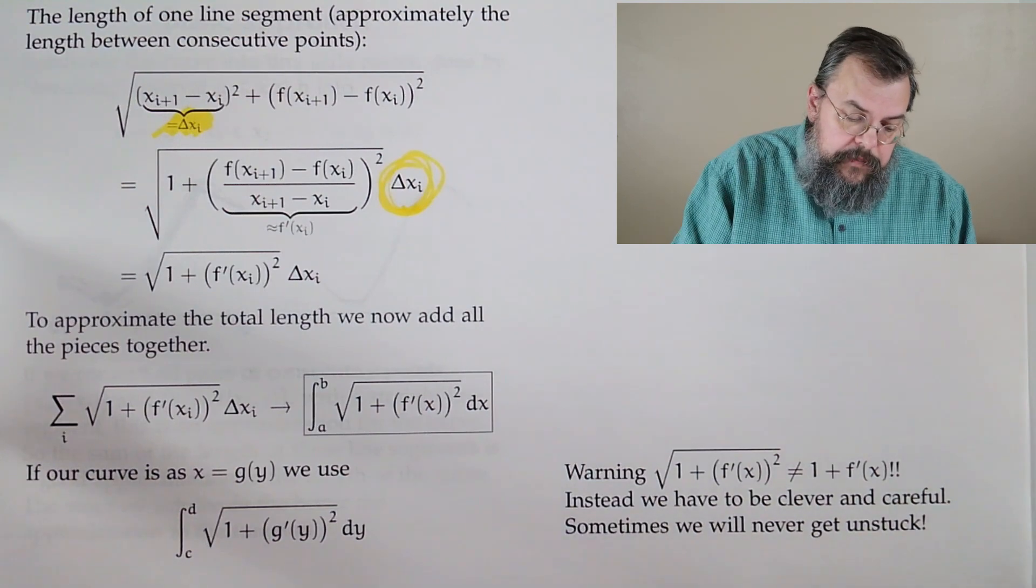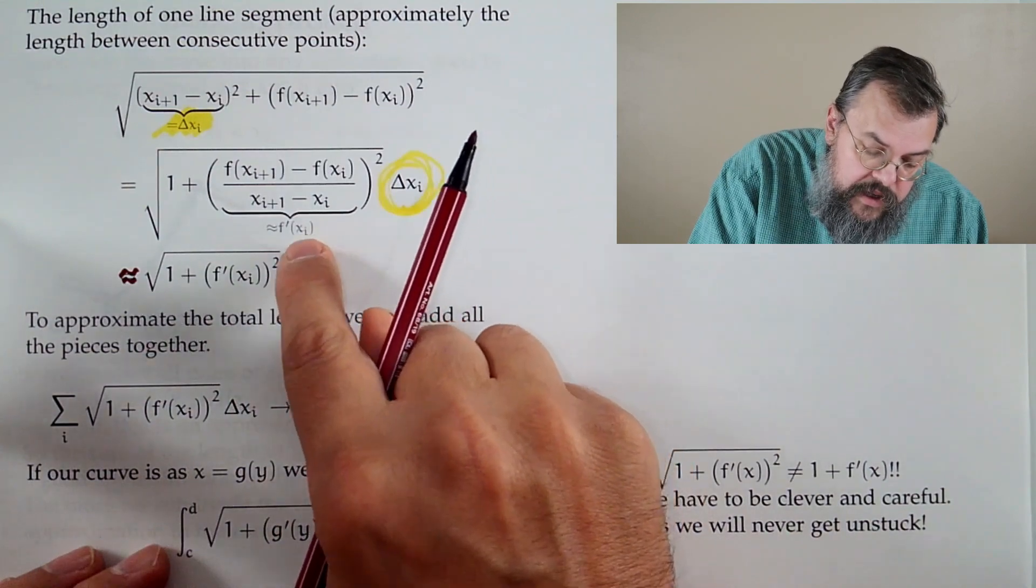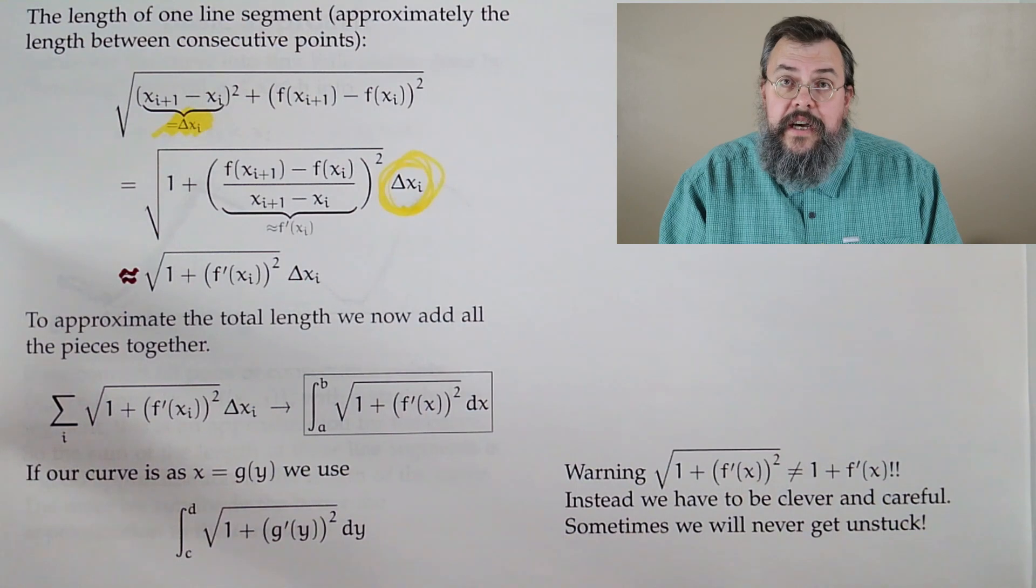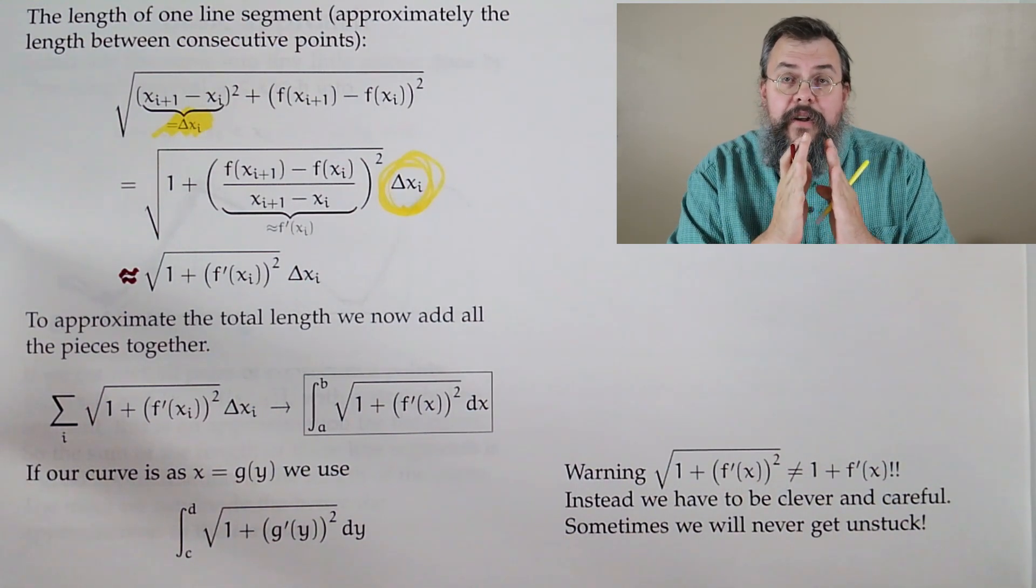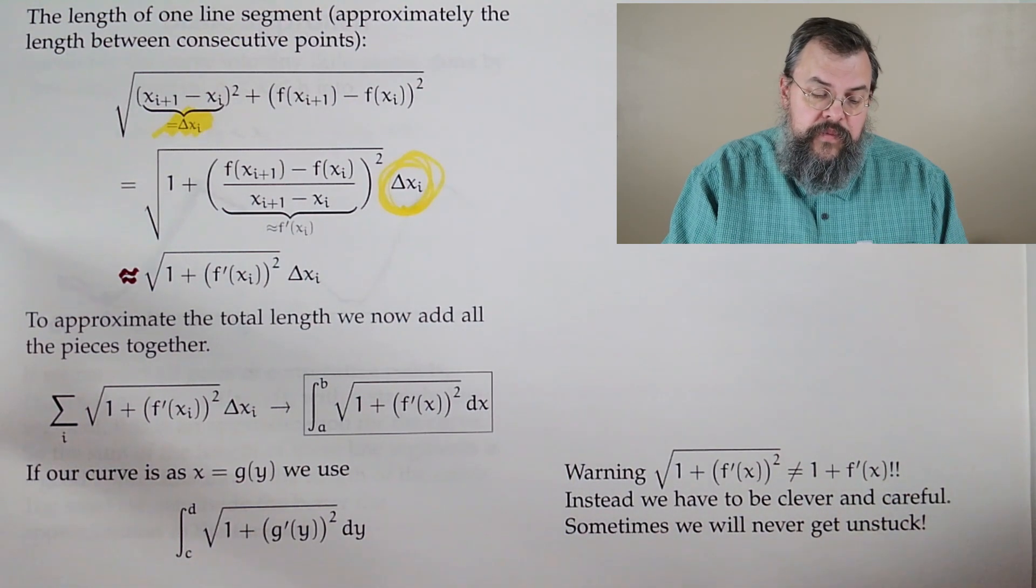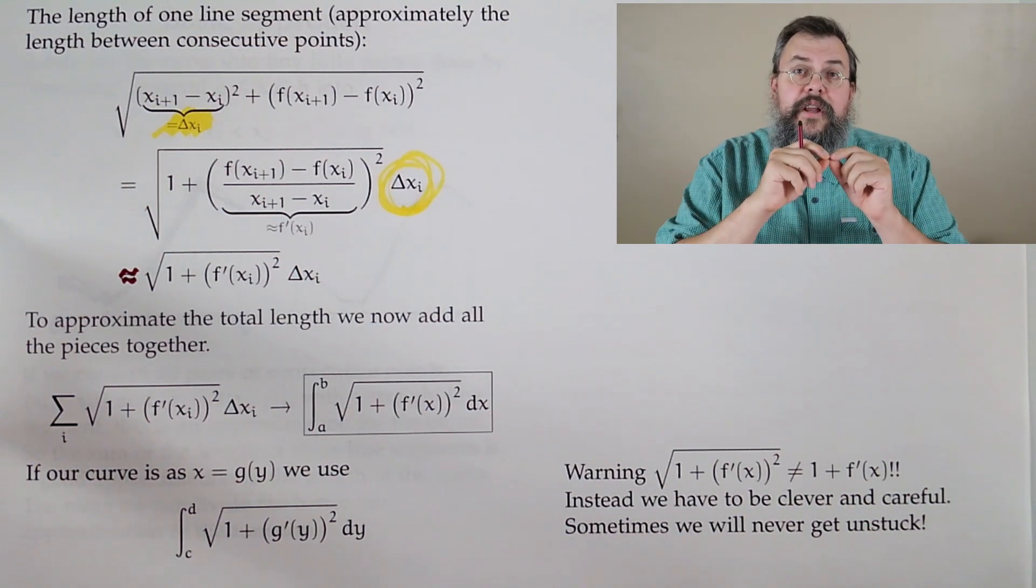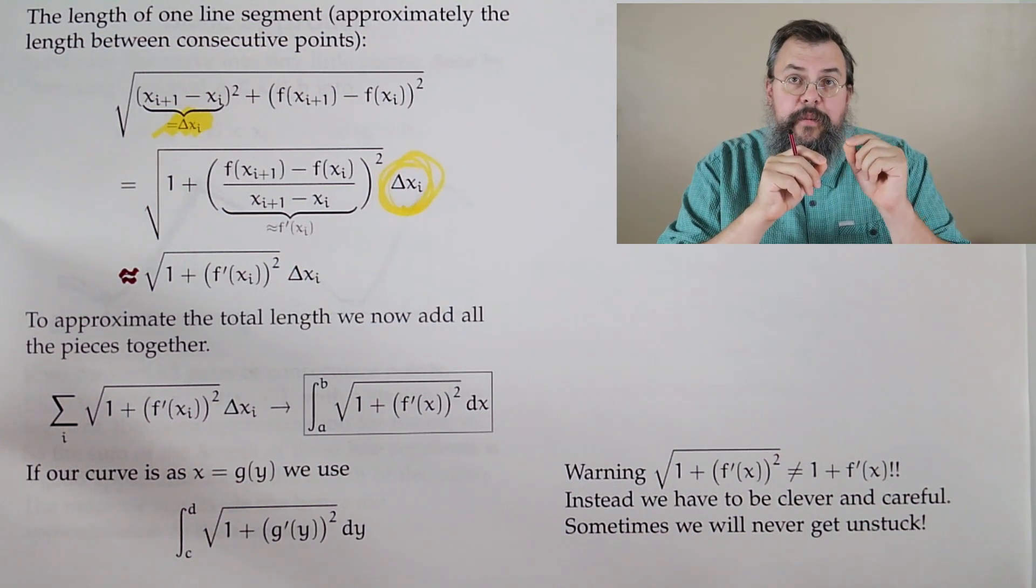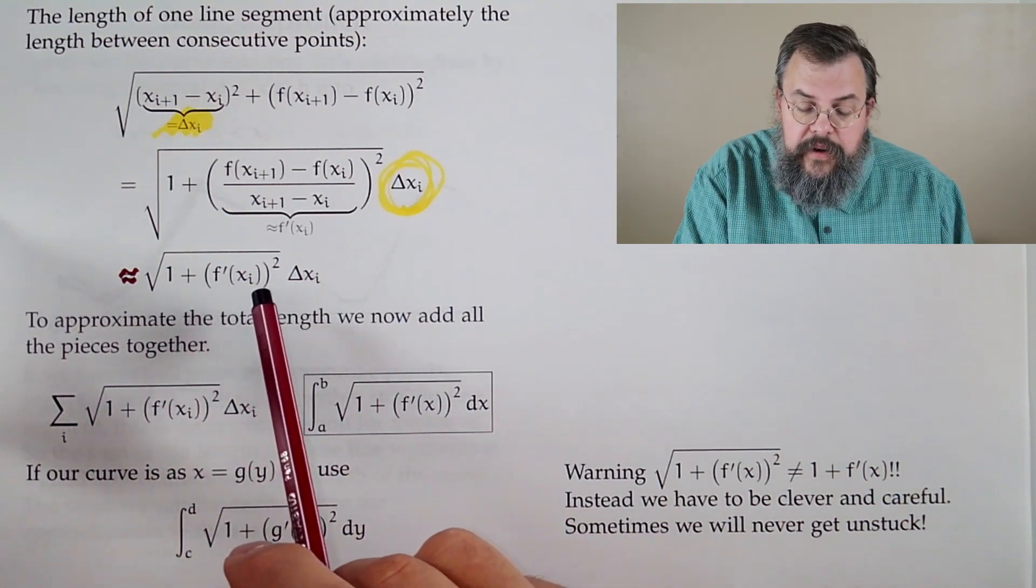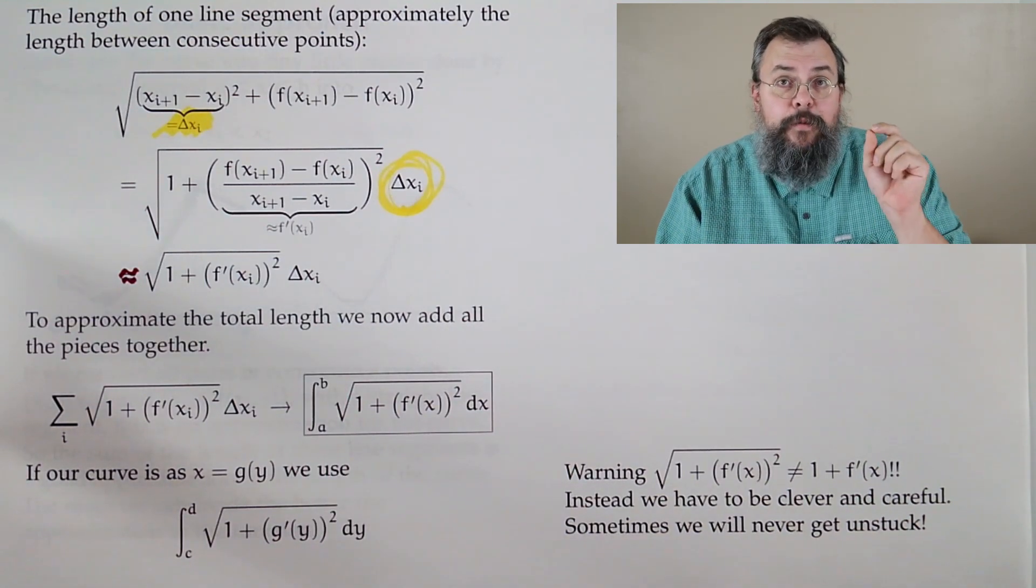I should say it's an approximation here because it's not quite the derivative. See, there's an approximation there. But it's a really good approximation if we're really small. In other words, we've chopped up our points so they're very close to each other. So what we can now say is, hey, there's a nice expression for the length of the line segment between two consecutive points. It's this square root of 1 plus the derivative at your point squared times the change in x. All right, good. Now that's one piece.